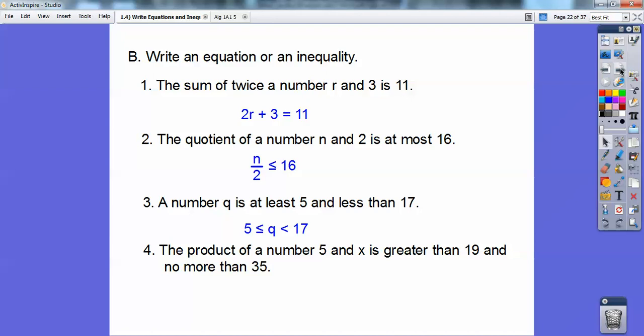How about this one? The product of a number 5 and X, that would be 5X, is greater than 19 and no more than 35, so greater than 19. So, 5X is going to go in the middle, 19 is going to be over here, and then 35 will be on the right. So, there it is, 19 is less than 5X, which is less than or equal to 35. You have some of those on your homework on this.